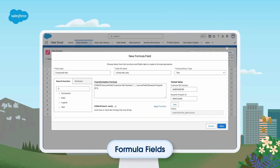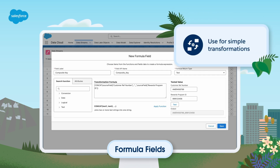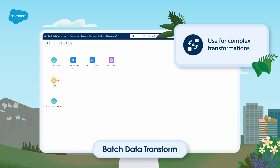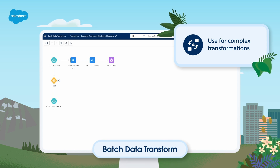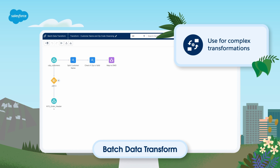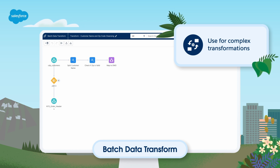Once in Data Cloud, this data can be enriched and transformed further. For simple transformations, formula fields can be added to individual data streams. For more complex transformations, use Batch Data Transform and Streaming Data Transform after data ingestion and before data mapping to update one or more Data Lake objects. This preparation and ongoing data governance is crucial for success when using Data Cloud's segmentation and activation capabilities.